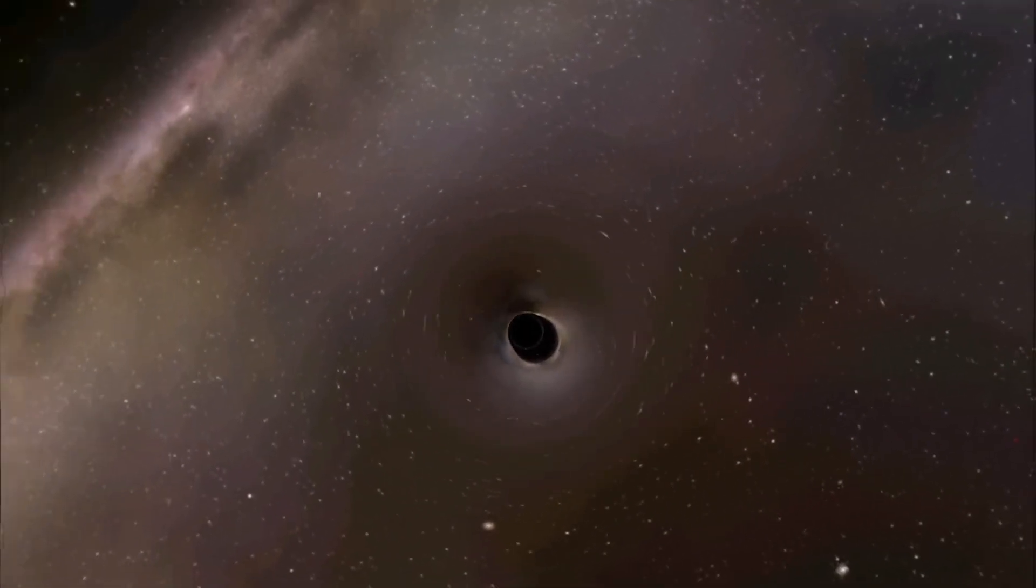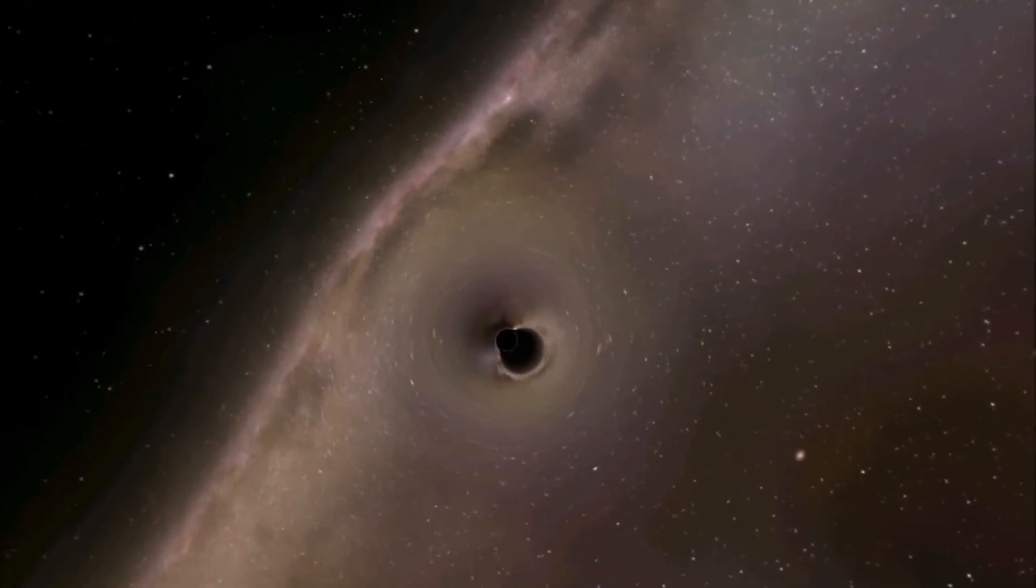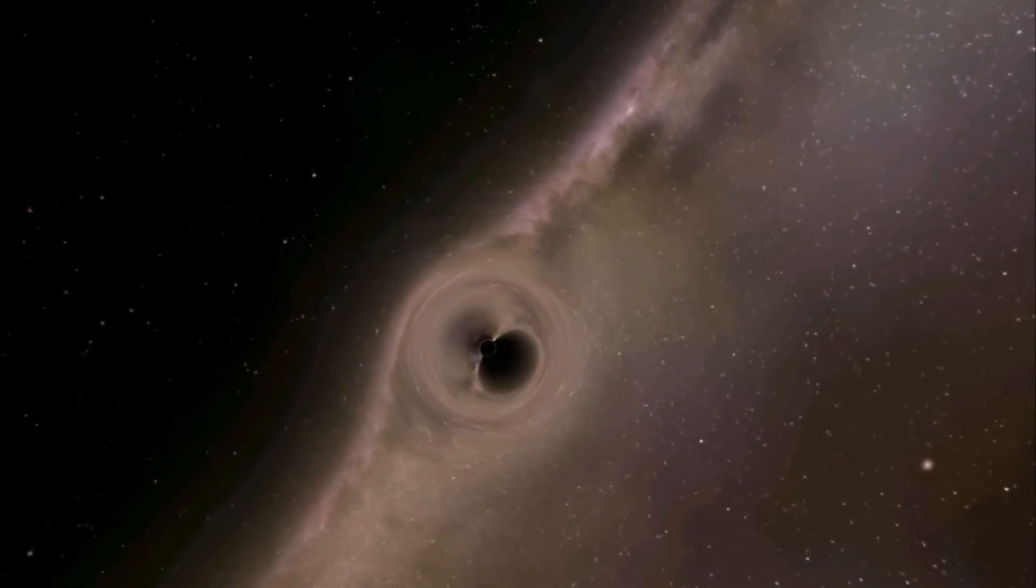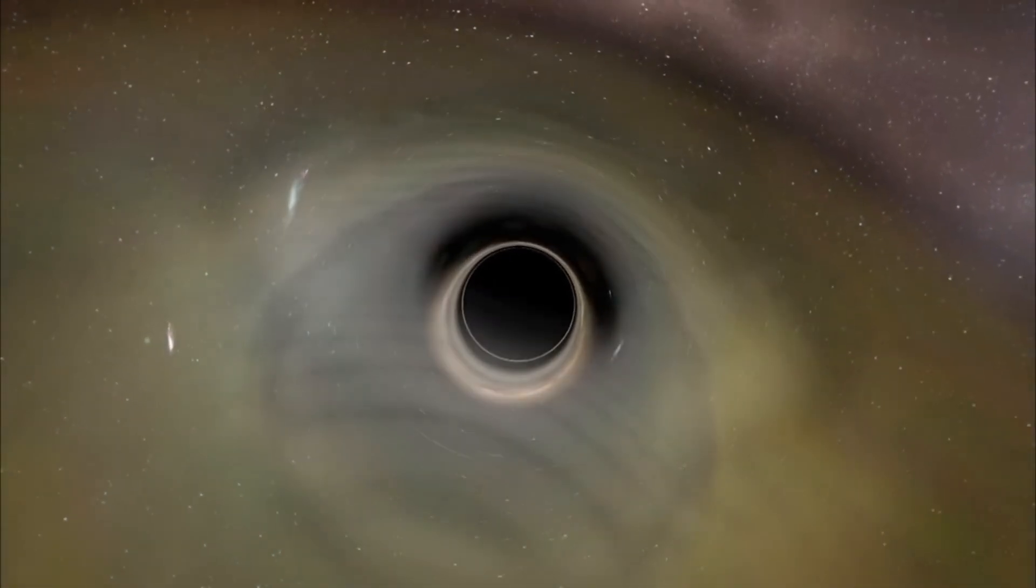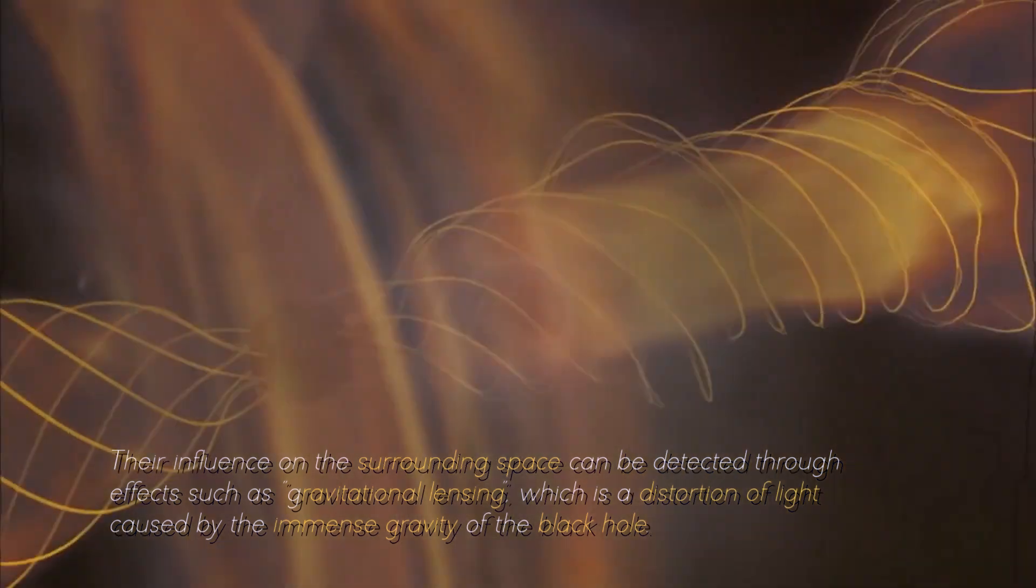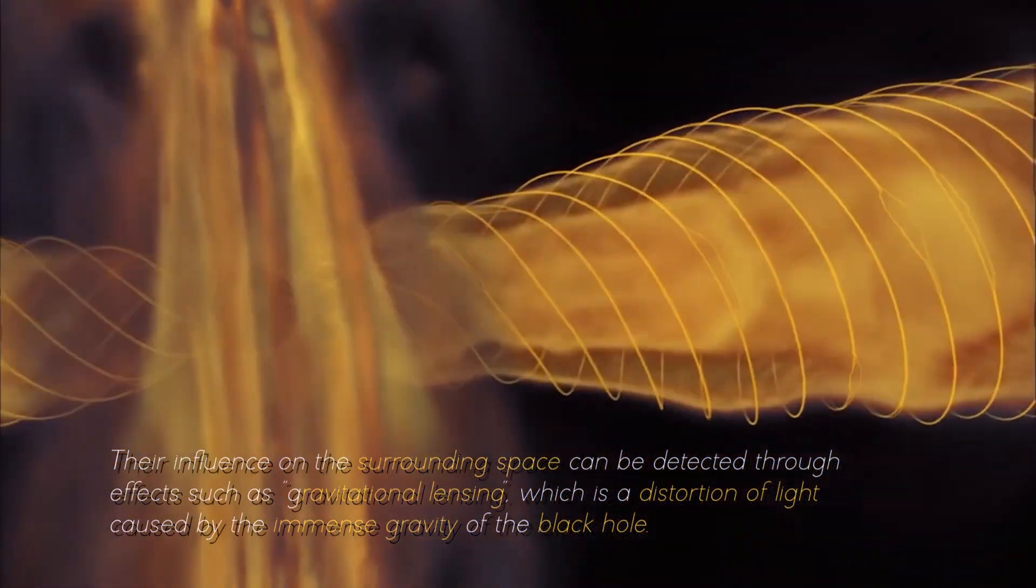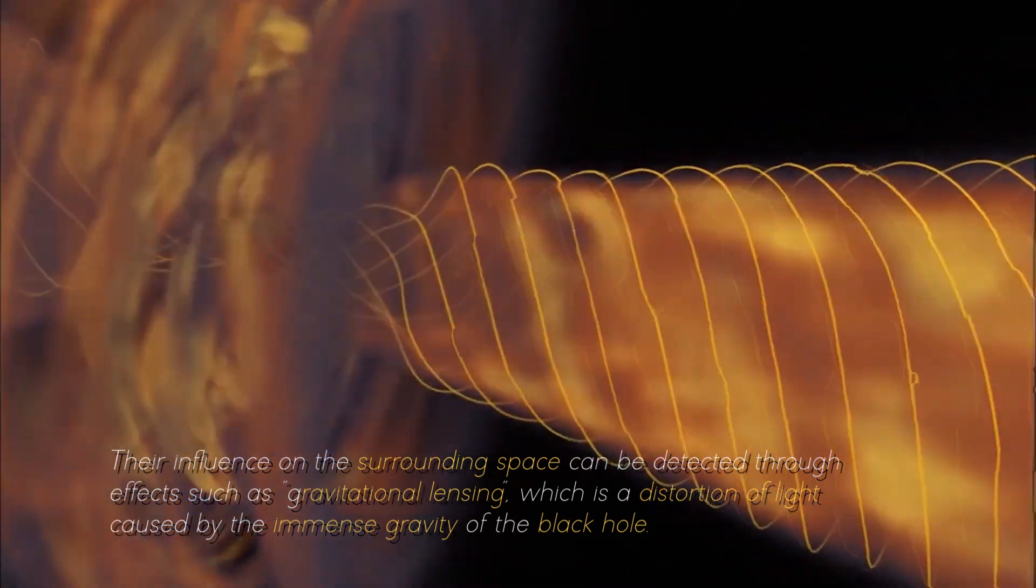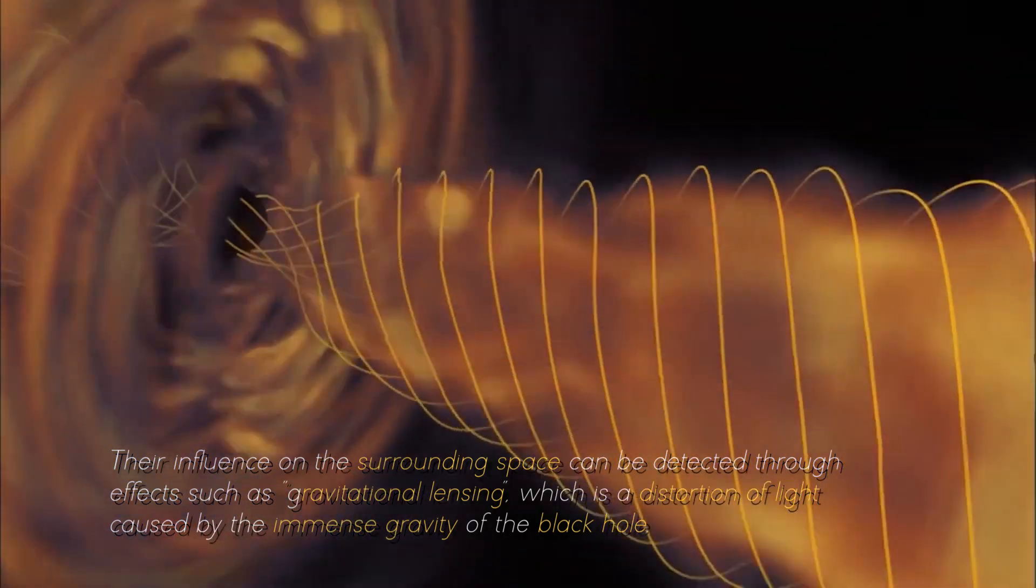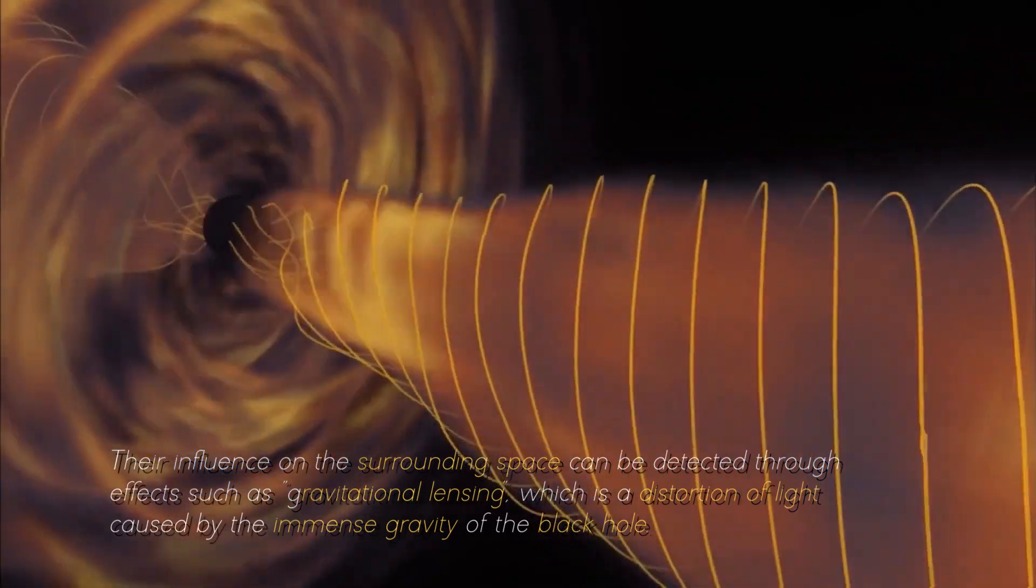The presence of an event horizon around black holes is what makes their direct study difficult, but this does not mean that it is completely impossible. Their influence on the surrounding space can be detected through effects such as gravitational lensing, which is a distortion of light caused by the immense gravity of the black hole.